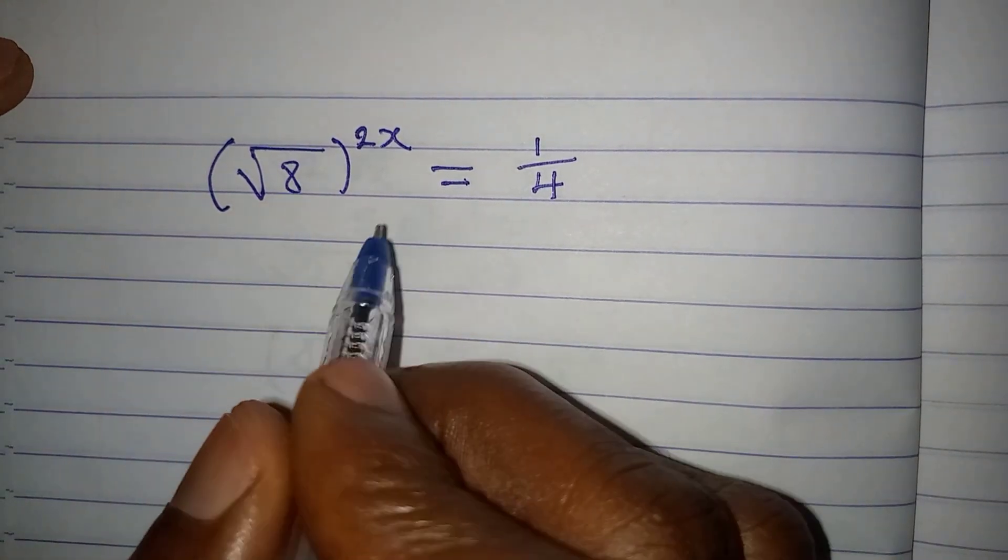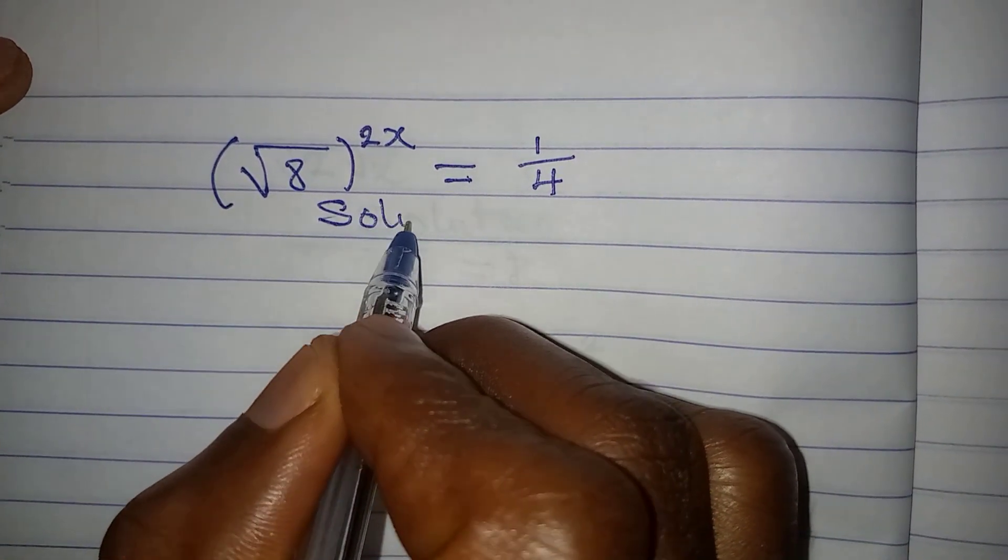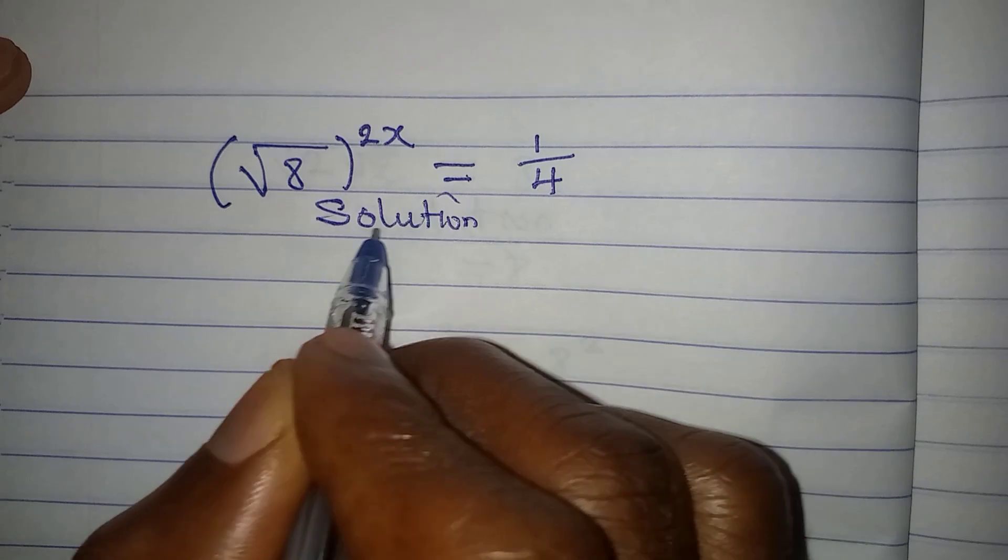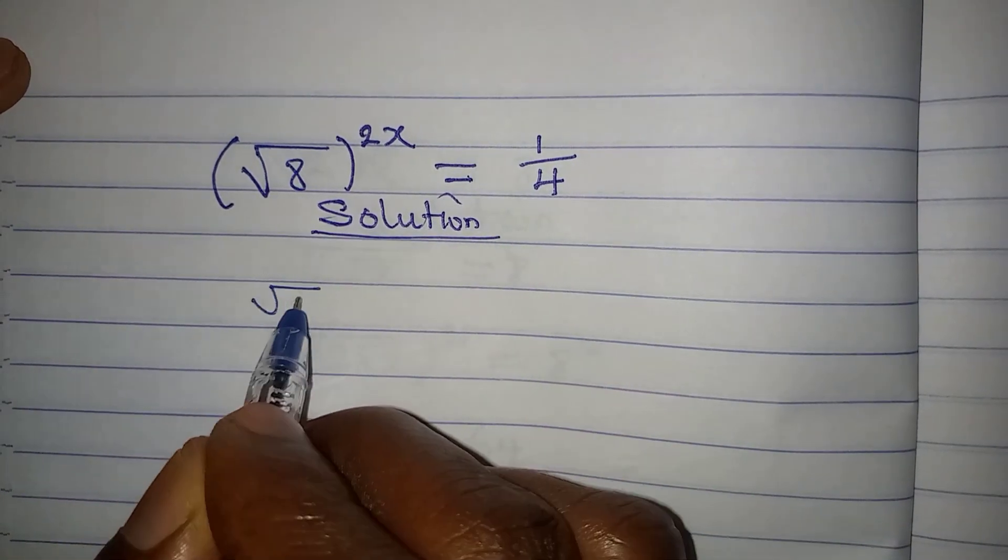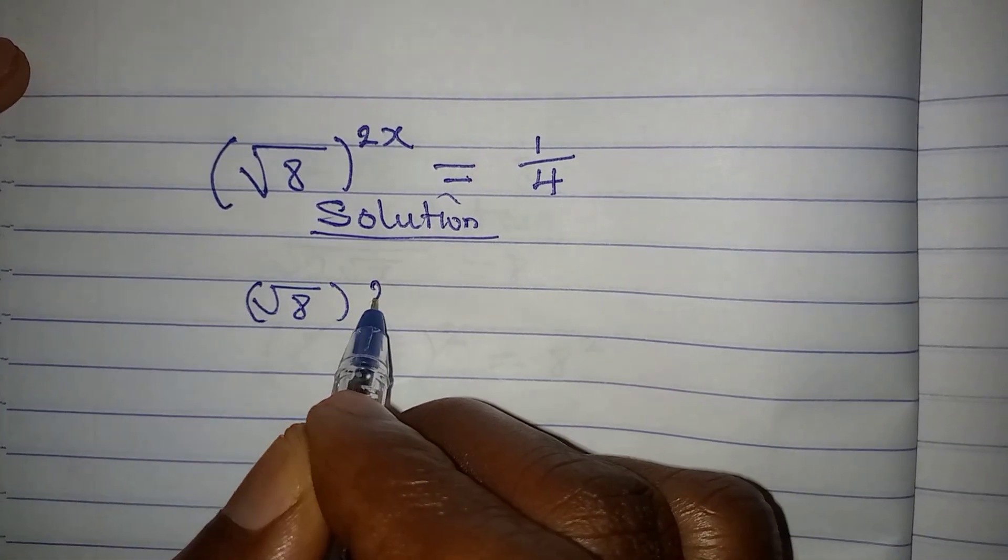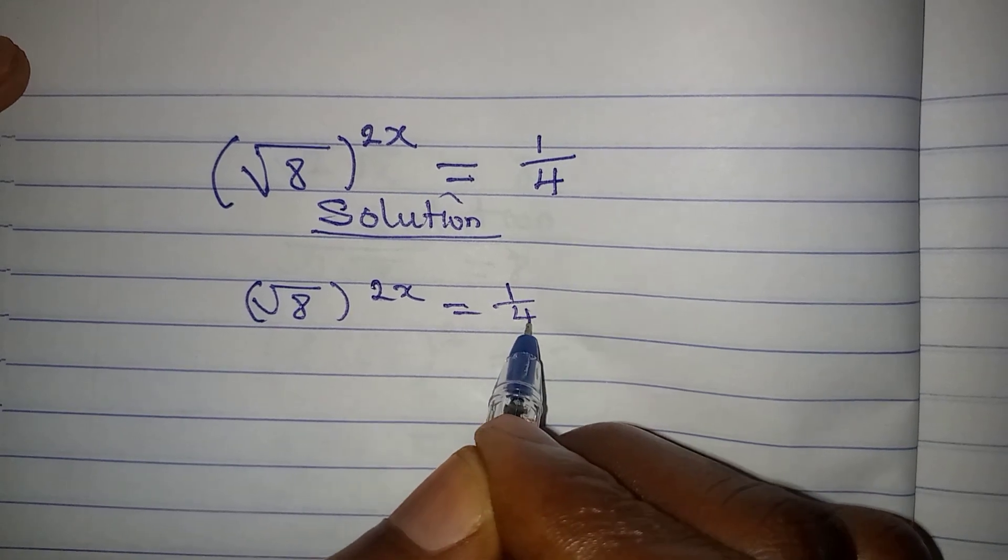Hello everyone, let's deal with this very quickly. We have square root of 8 to the power of 2x being equal to 1 over 4.